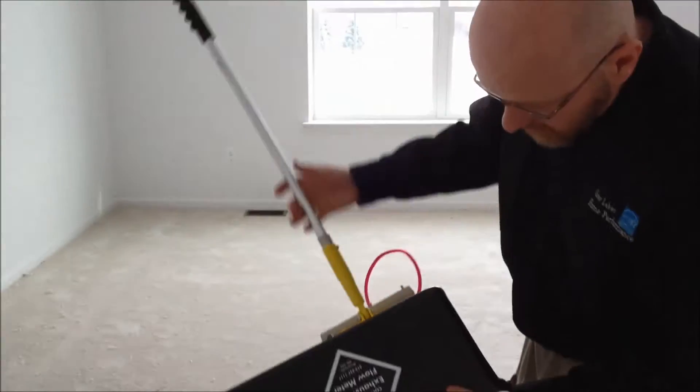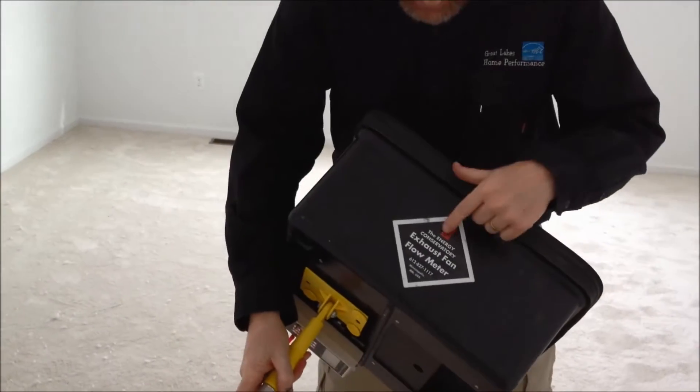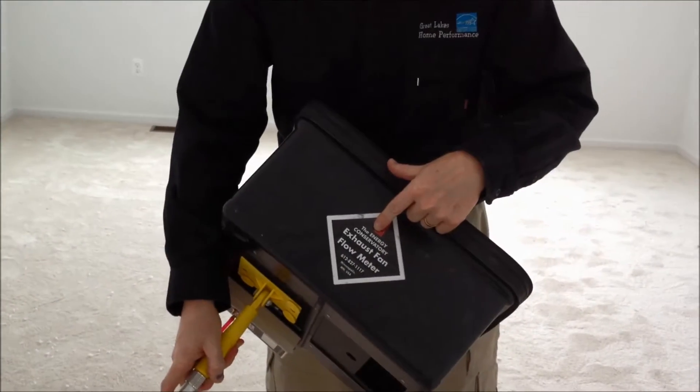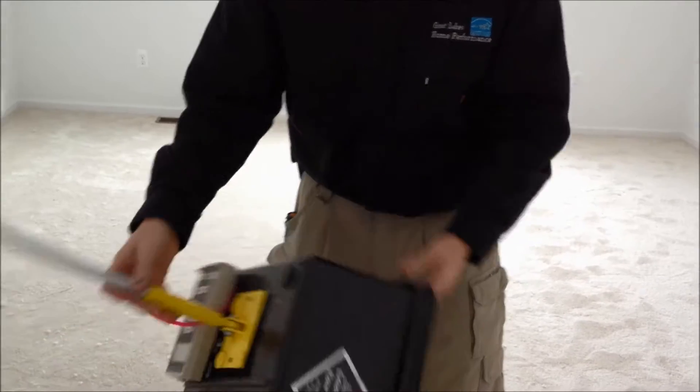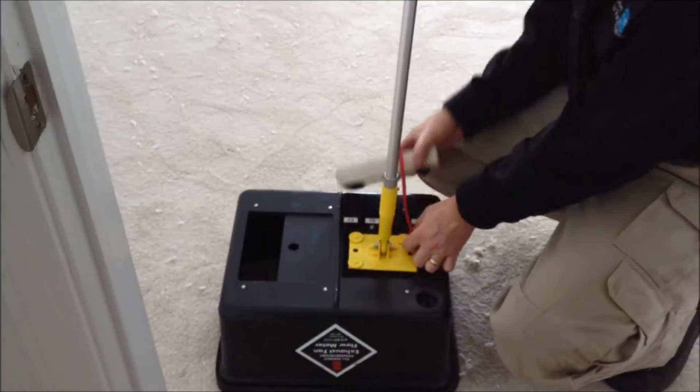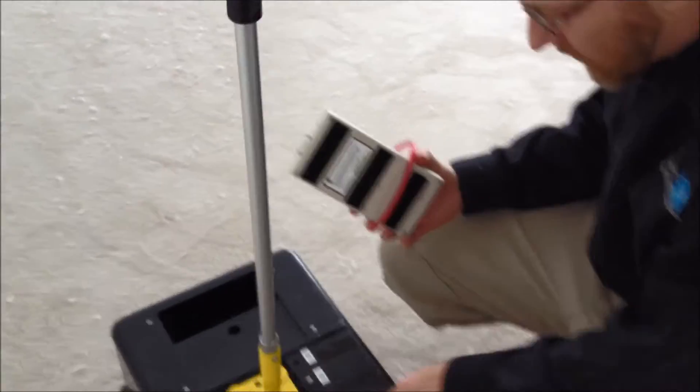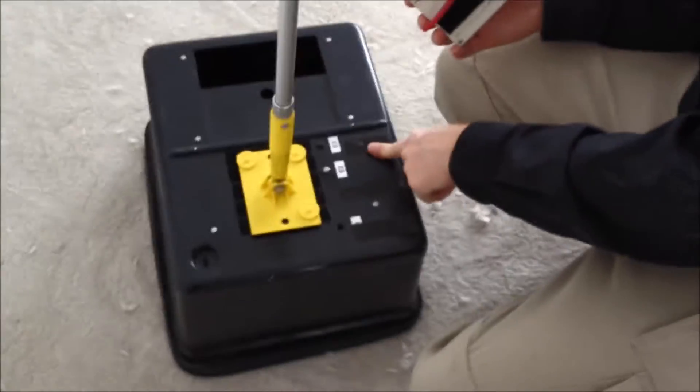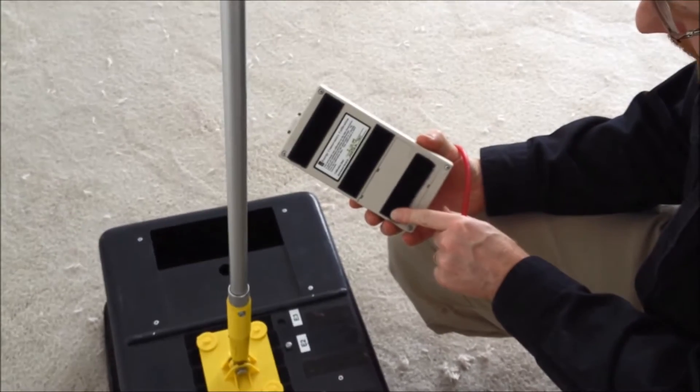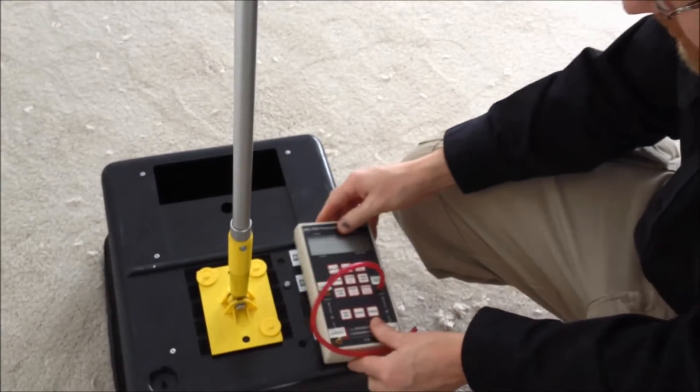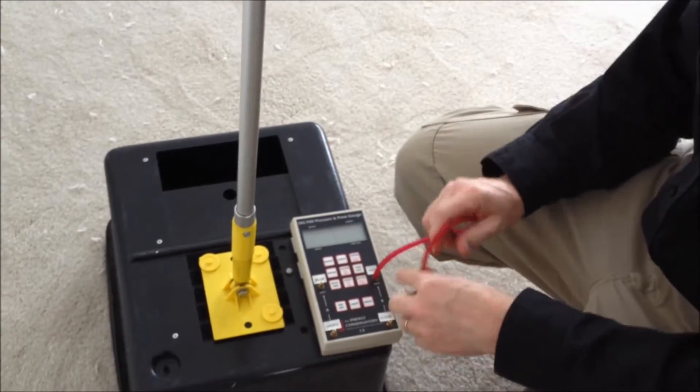I have right down here the Energy Conservatory Exhaust Fan Flow Meter. Some people call it a flow box. It's really the flow meter is what they call it. And there's a couple modifications that I did to mine. First of all, I added three more strips of Velcro to mine and another strip of Velcro to my gauge so that I can stick it right on there and free up my other hand.